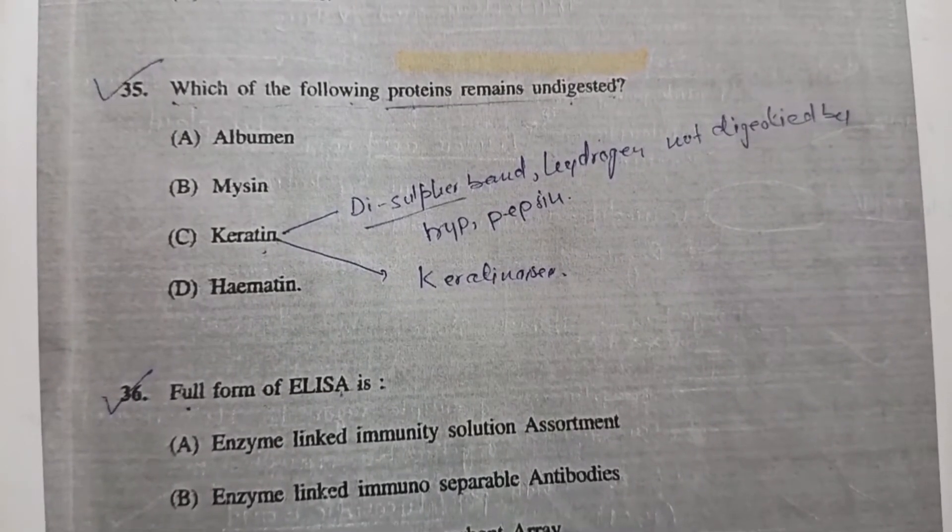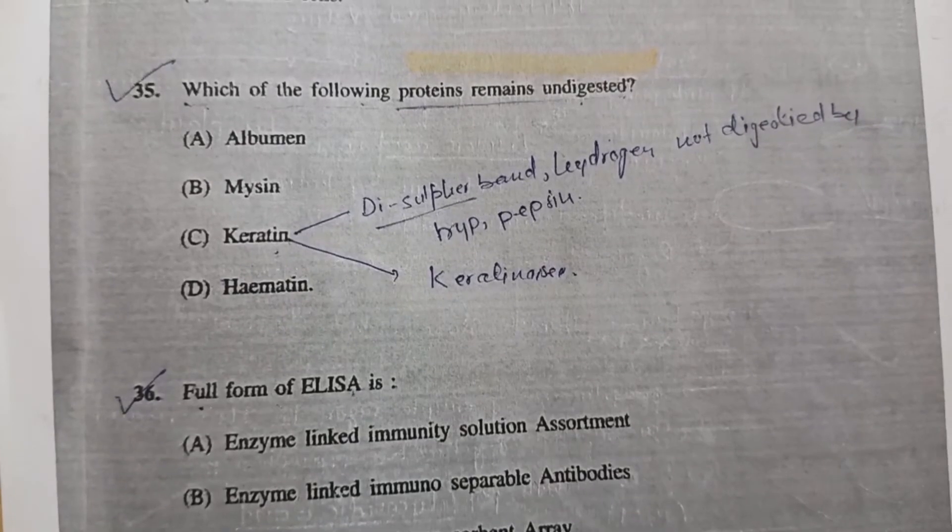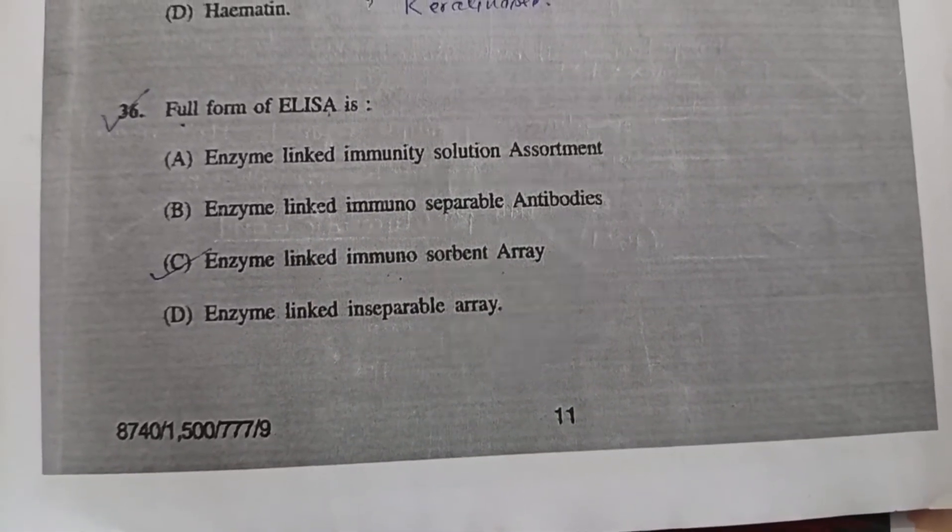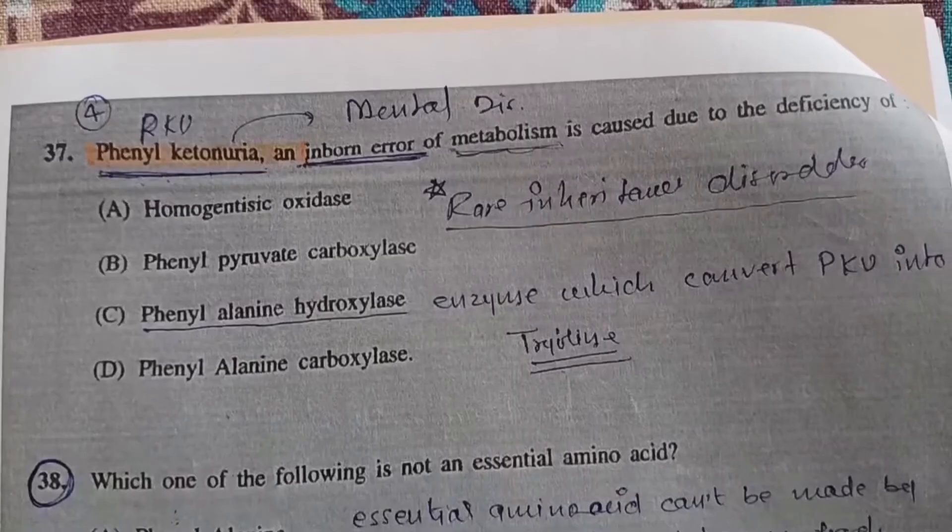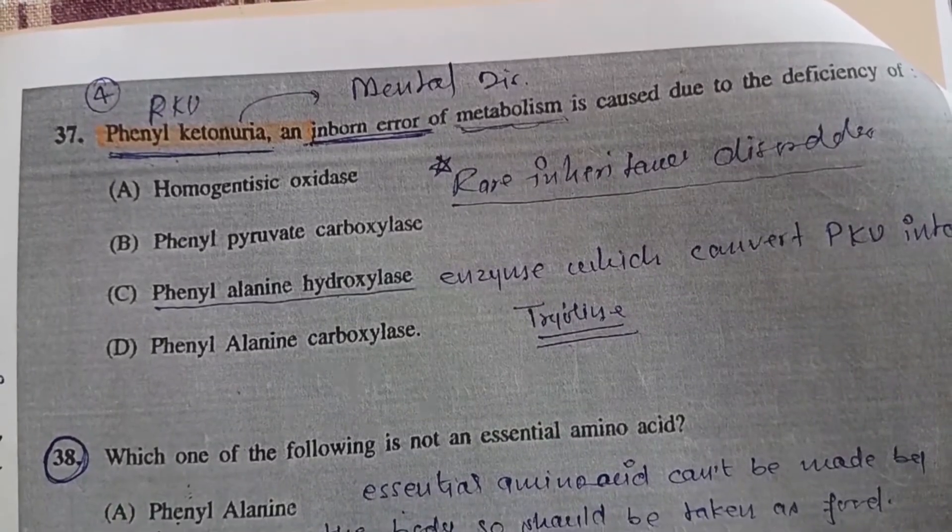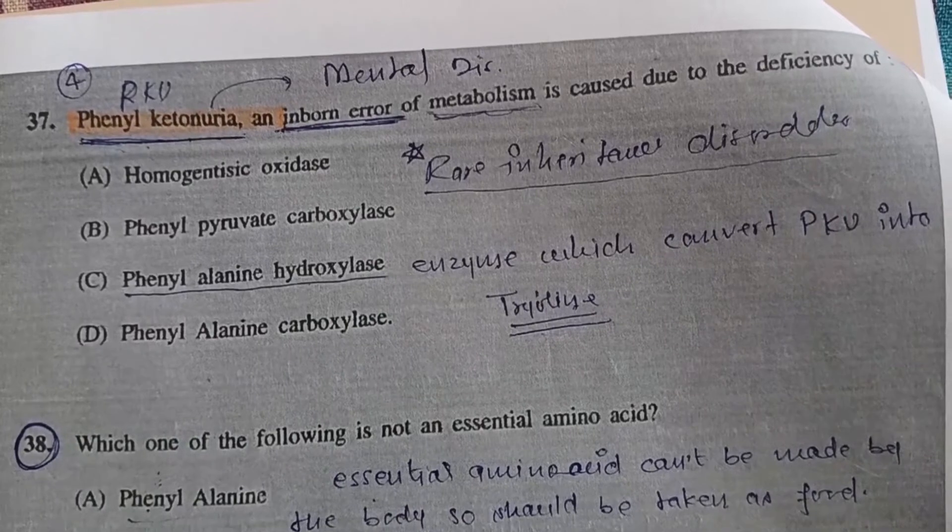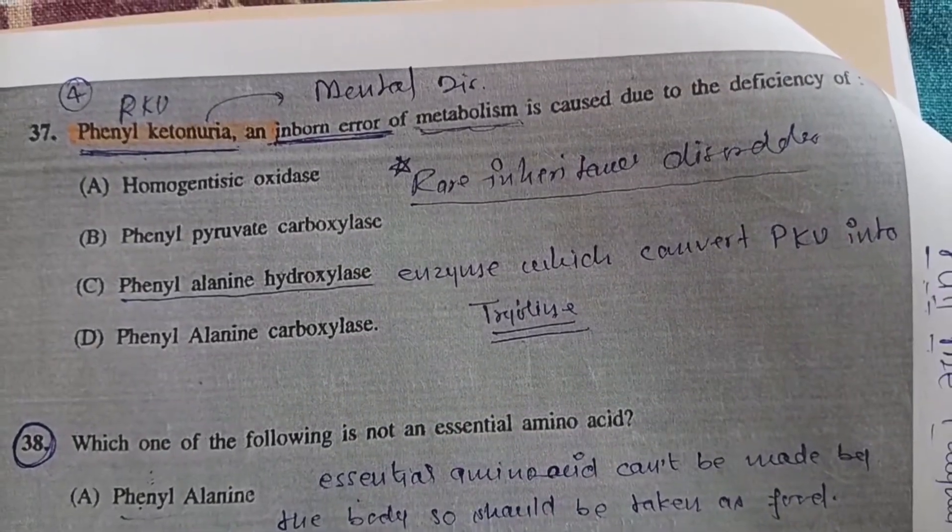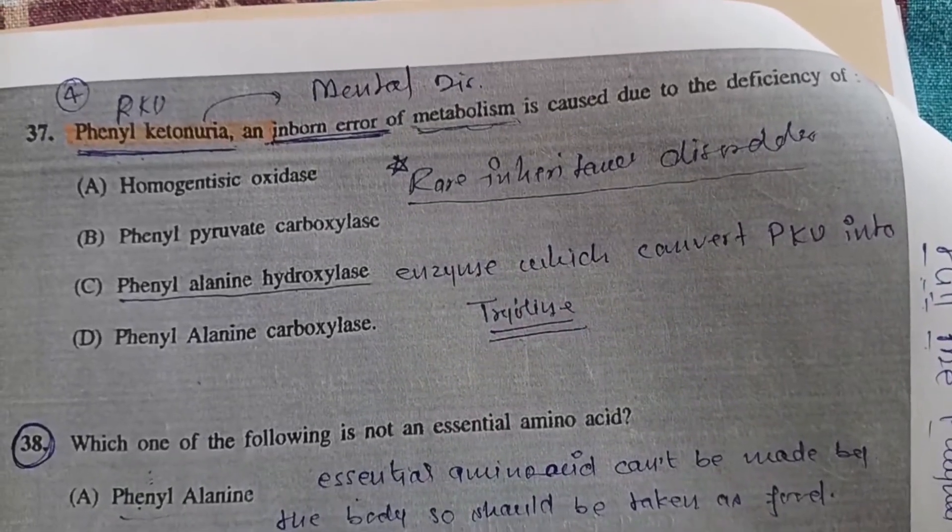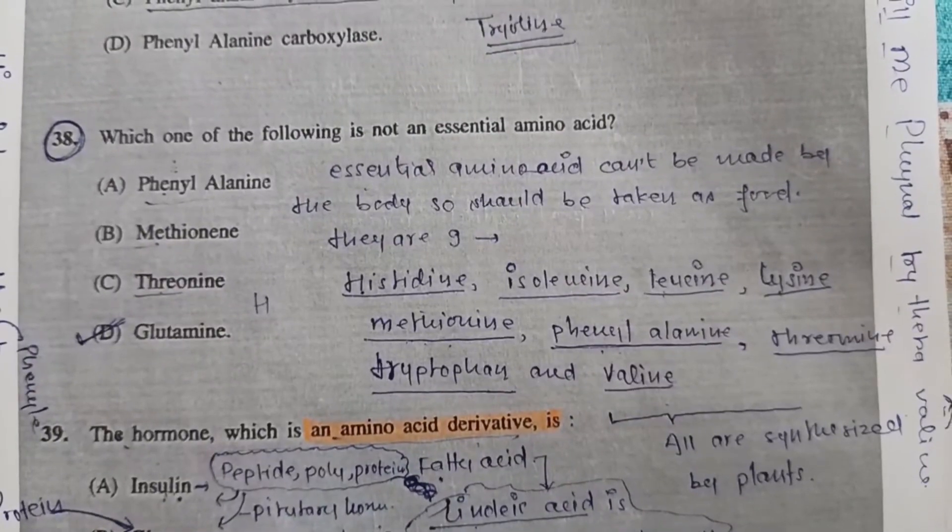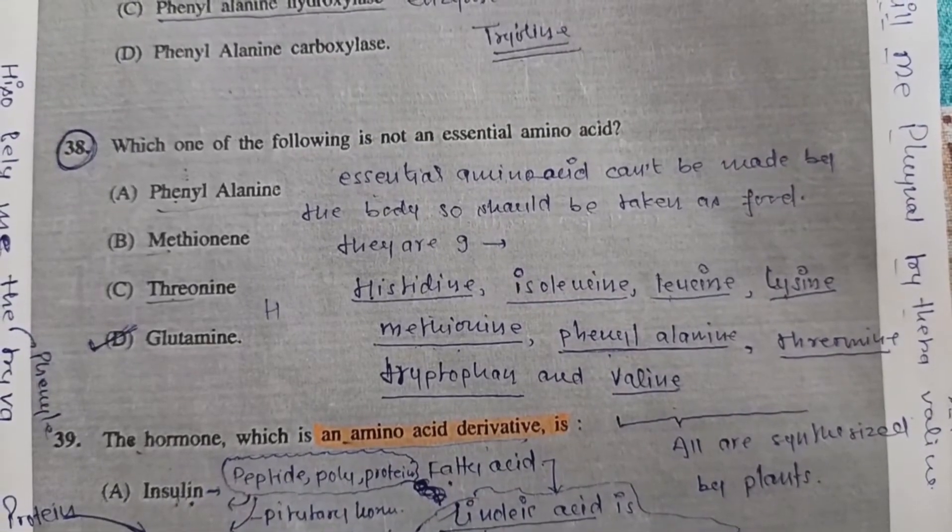Question 36: Full form of ELISA is - Answer is C, enzyme-linked immunosorbent assay. Question 37: Phenylketonuria, an inborn error of metabolism, is caused due to deficiency of - Option C, phenylalanine hydroxylase, an enzyme responsible for PKU. Question 38: Which of the following is not an essential amino acid? Option D, glutamate, is the right answer.